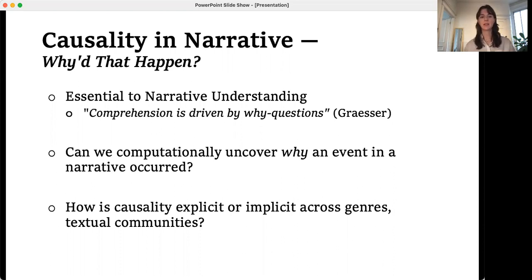If we can detect the presence of causal relatedness, then we could ask how is causality explicit or implicit across genres, textual communities, narrative domains. And if we can determine causal event pairs, then we can computationally uncover why an event happened given earlier events in the literary text.